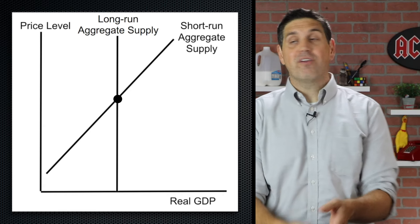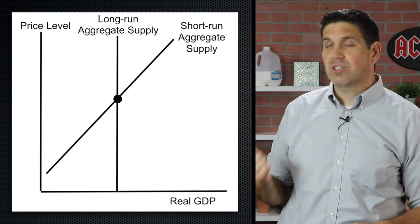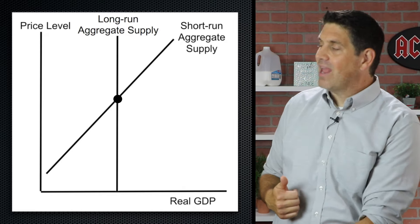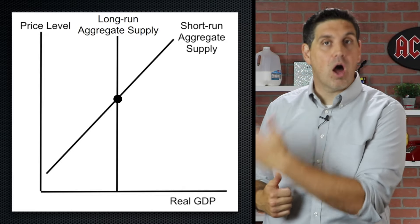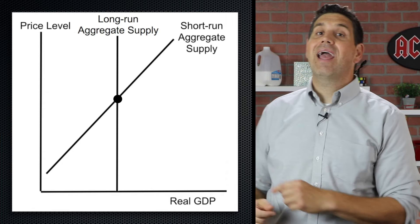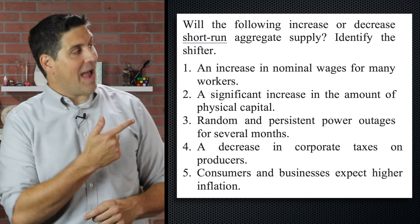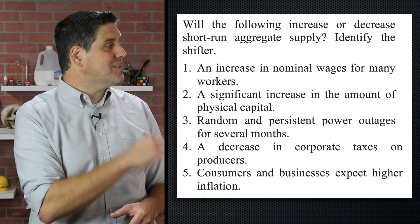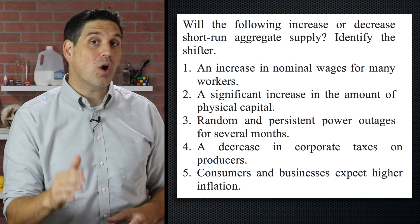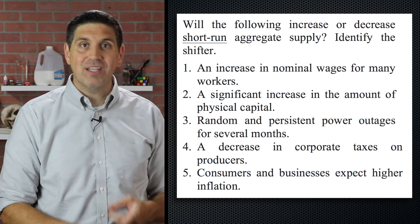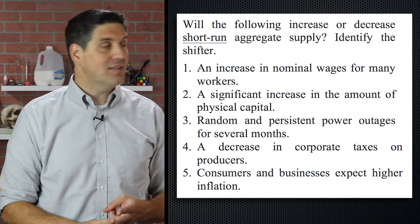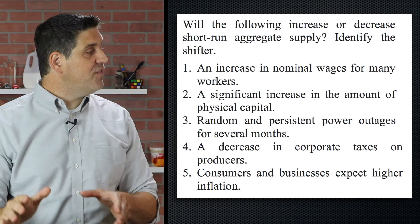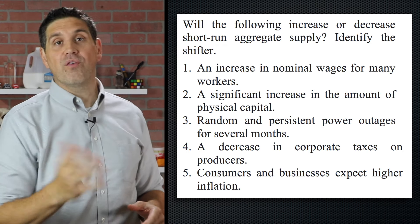Now you understand why there are two aggregate supply curves: an upward sloping short run supply curve and a vertical long run aggregate supply curve. But now it's time to practice. I have five scenarios for you. Figure out what's going to happen to the short run aggregate supply curve — is it going to increase or decrease? — and identify the shifter for each situation. Pause the video and I'll go over the answers.